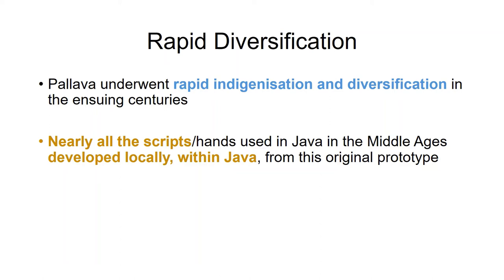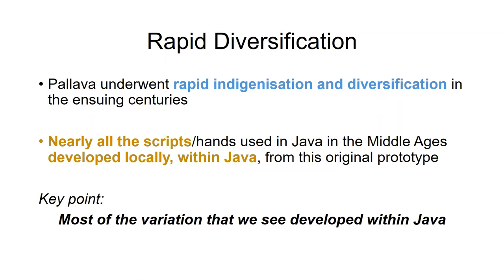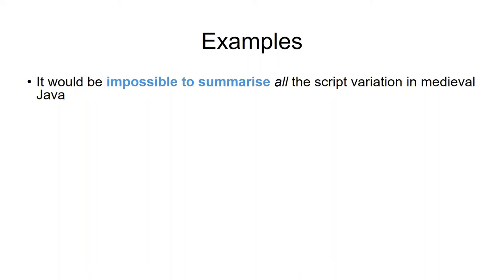Nearly all of the scripts used in Java in the Middle Ages developed locally from this original Pallava prototype. That's basically the key point — most of the variation that we see developed in Java, an island only slightly larger than England. There is a huge amount of diversity, as you'll see.